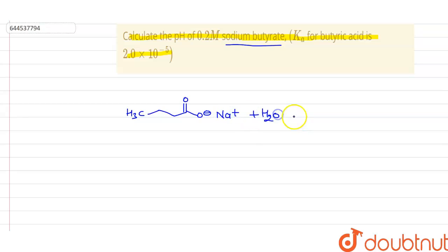When it undergoes the hydrolysis which is a salt of the weak acid and strong base, then it gives the formation of NaOH which is a strong base and the butyric acid that is the weak acid: CH3, CH2, CH2, it will be C double bond O, it will be OH.